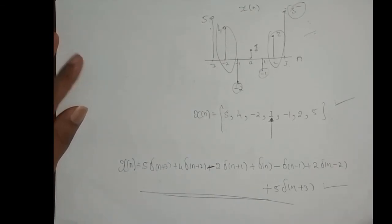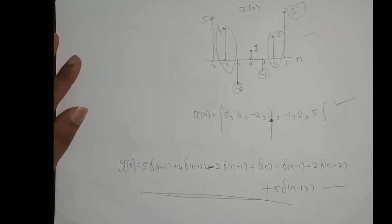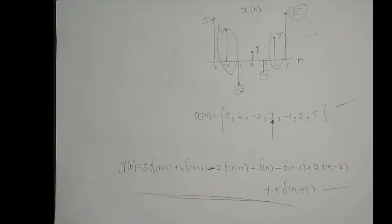So these are the three ways to represent a discrete time signal, and this is the prerequisite we needed to know in order to derive the output of an LTI system.